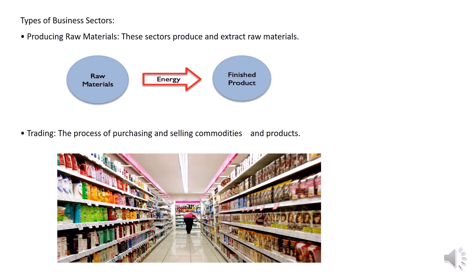Types of business sectors. The first is producing raw materials — these sectors produce and extract raw materials. Trading is the process of purchasing and selling commodities and products.